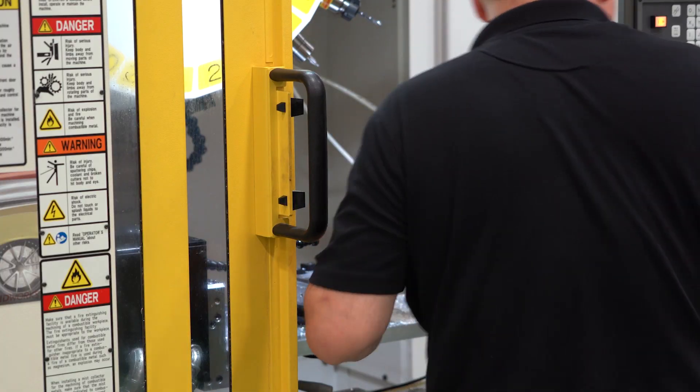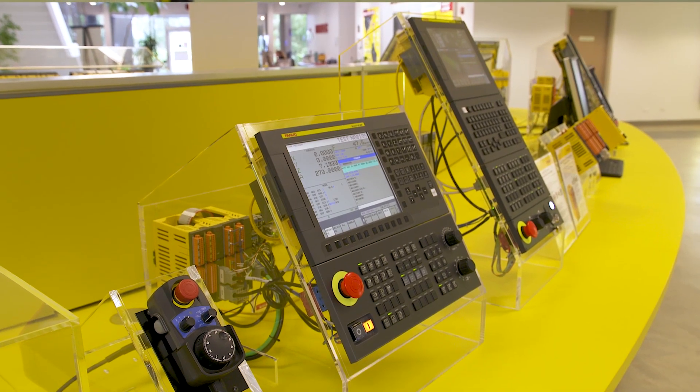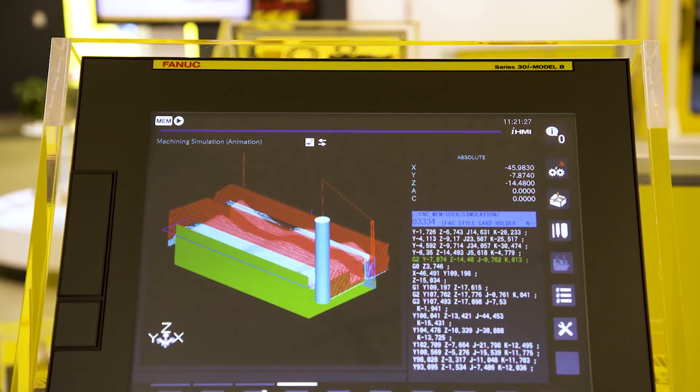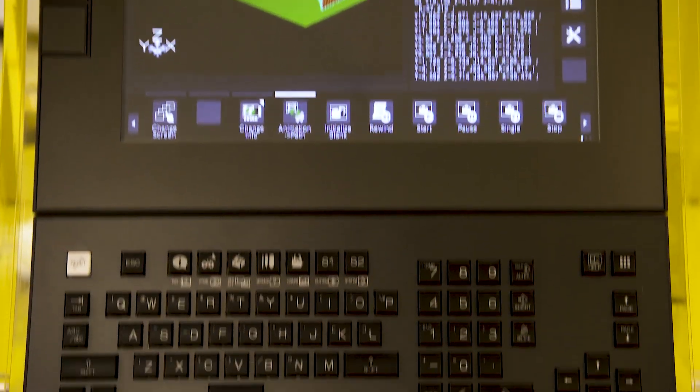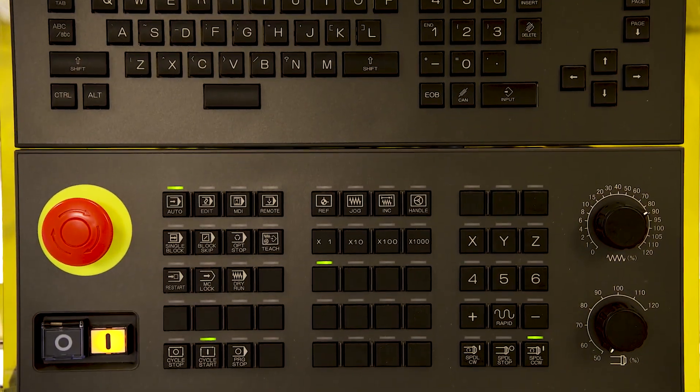FANUC's fast cycle time technology is an easy way to keep your operations competitive advantages, and it comes standard with the 30 IB series and 0 IF series of CNCs, and also with our latest plus versions of these controls. Thank you for watching.